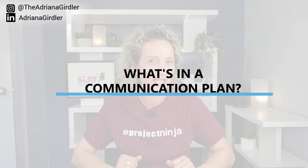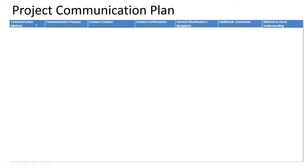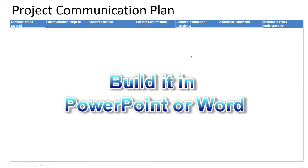So what's in a communication plan? I actually have an example for you and we're going to walk through it. Your project communication plan is a summary document of all the types of communications you are going to be doing within your project during the execution phase. It's a matrix — I do mine in PowerPoint, but you can do it in a Word document, whatever suits your needs. There's no right or wrong.